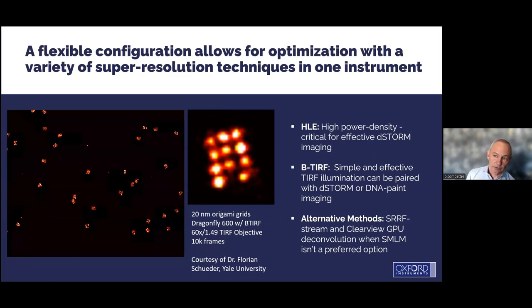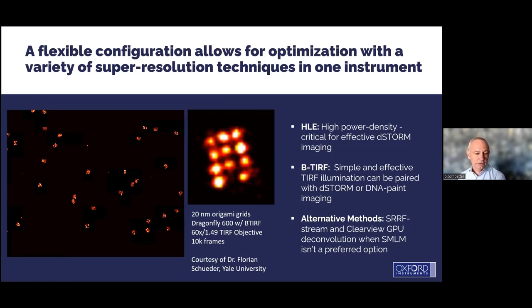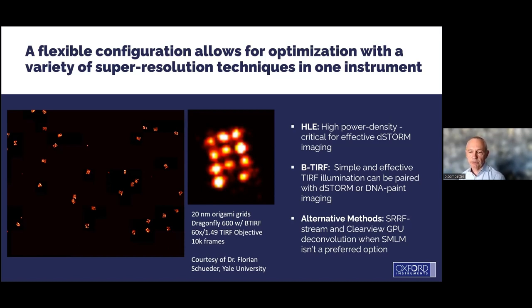This is an example of an image taken with a single mode fiber where you see all these artifactual fringes, whereas with B-TIRF the illumination is much more homogeneous. If you combine high power laser with B-TIRF, you get enough power for blinking and a very high signal-to-noise ratio to get a very nice single molecule localization image. This example shows DNA origami with 20 nanometer distance between dots, and we managed to get below 20 nanometers resolution using a 60x 1.49 NA TIRF objective.